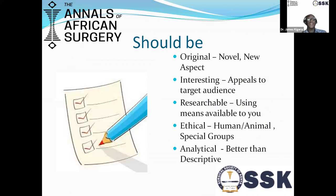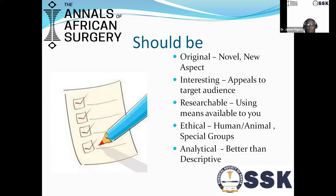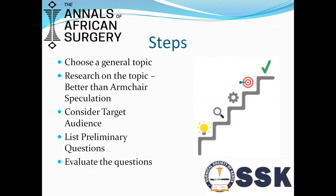It should be original — not necessarily that you are designing a new procedure, but it should be novel in some way. It should be interesting, appealing to your target audience, and it should be researchable with the means available to you. It does not help to come up with a question that would be difficult in your circumstances to research. It should be ethical, whether this is human ethics or animal ethics. No matter how convinced you are, if it's not ethical, you shouldn't be thinking about it. Analytical questions are usually better than descriptive because, more likely than not unless it's a new illness or procedure, the descriptive bit has already been done and what you're looking for is a different take, an analysis into it.